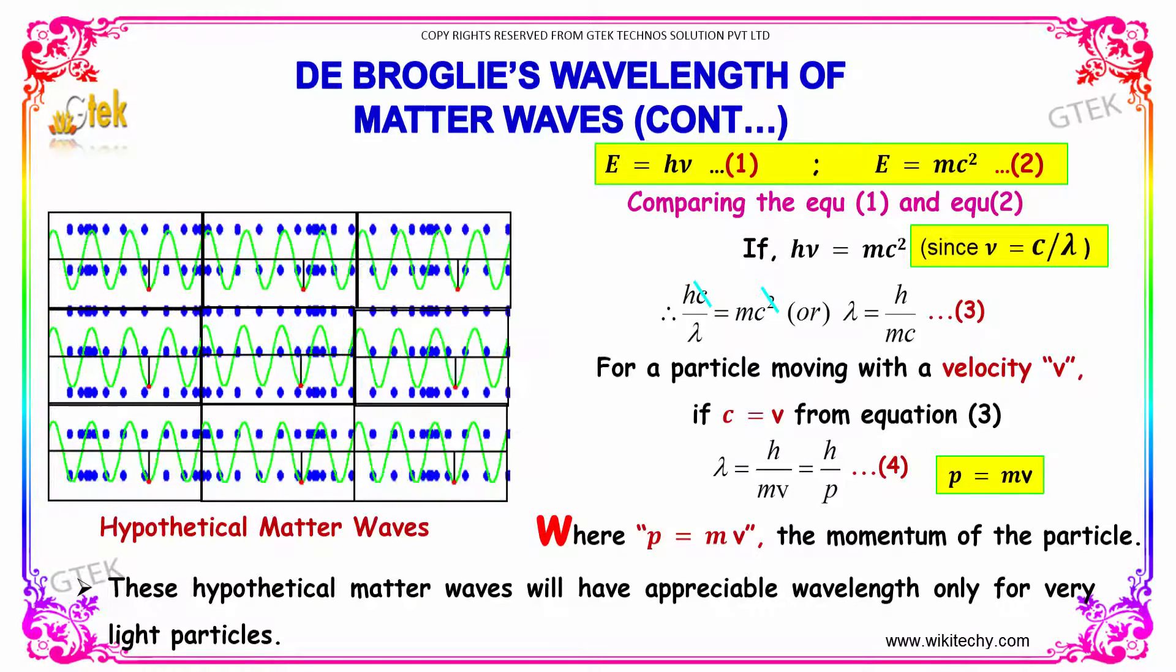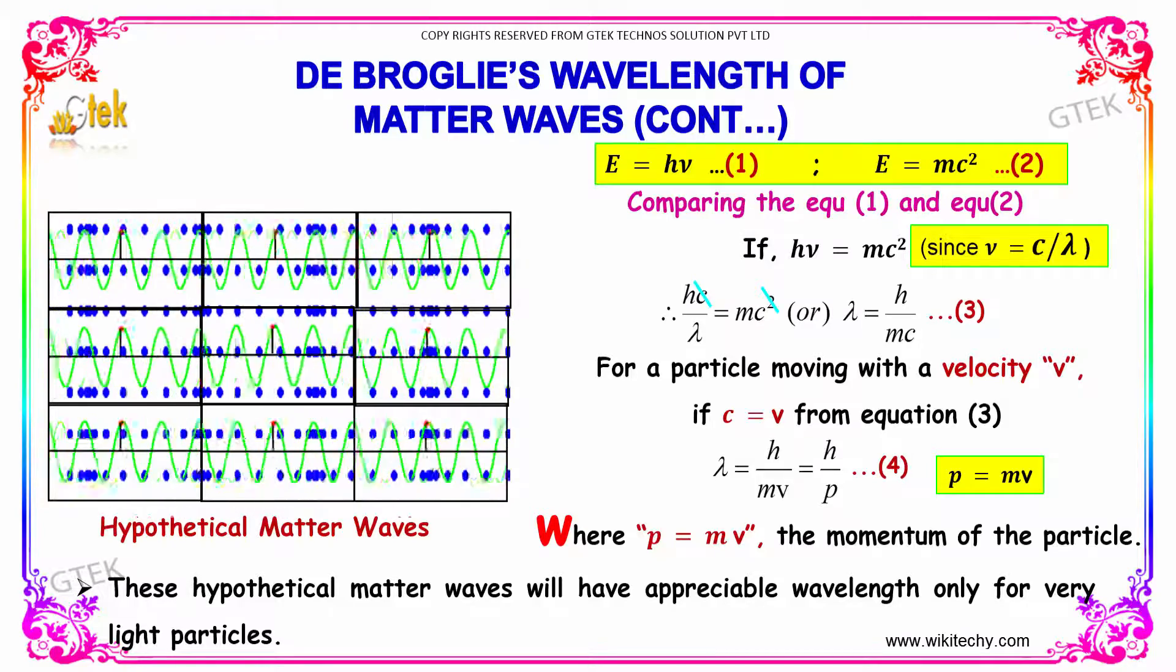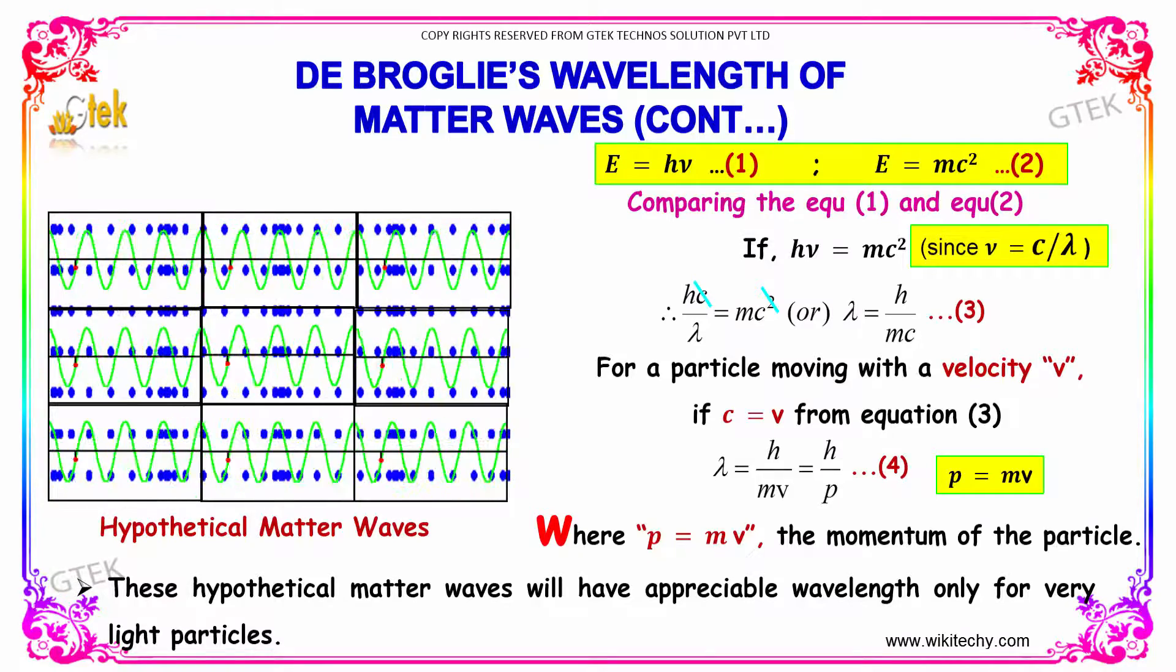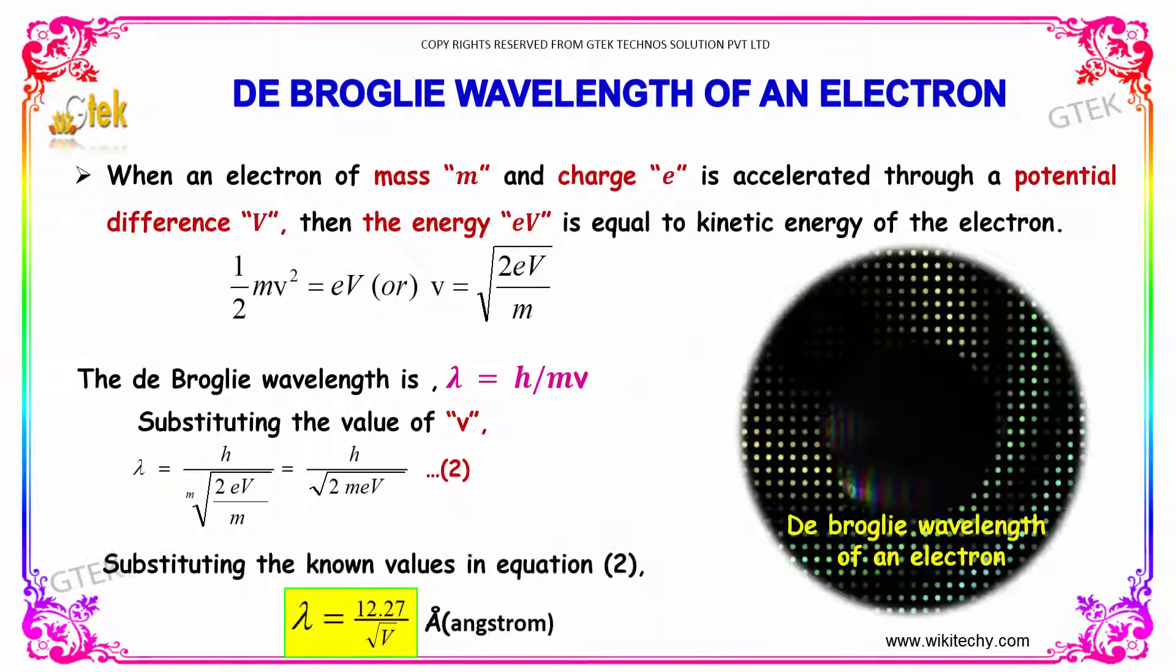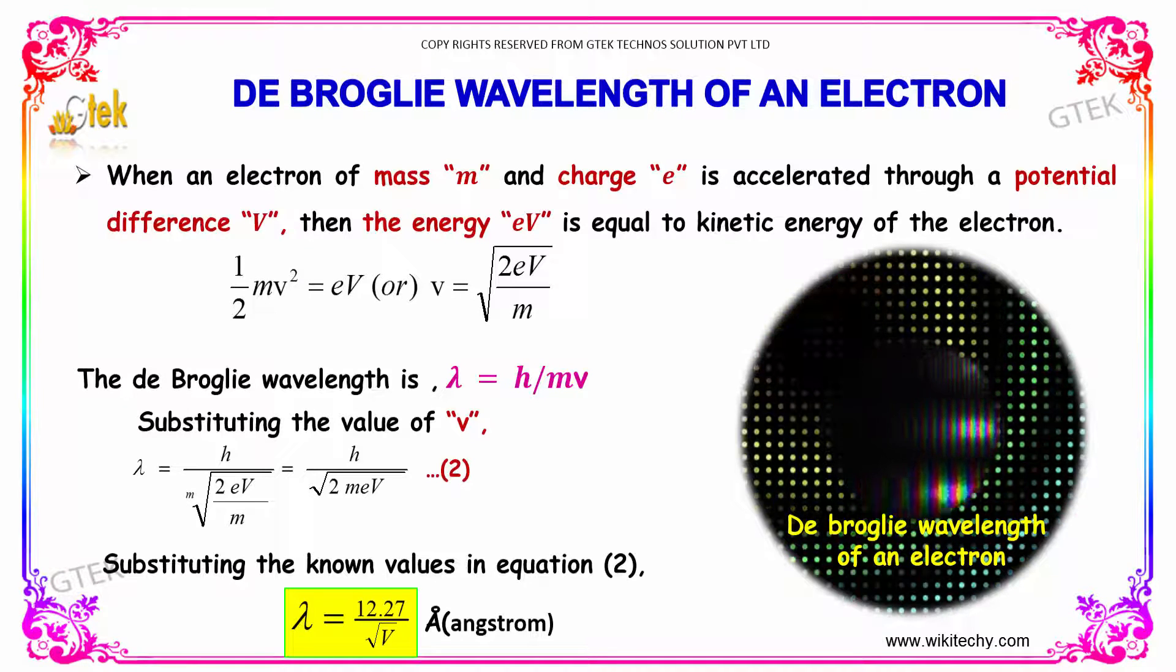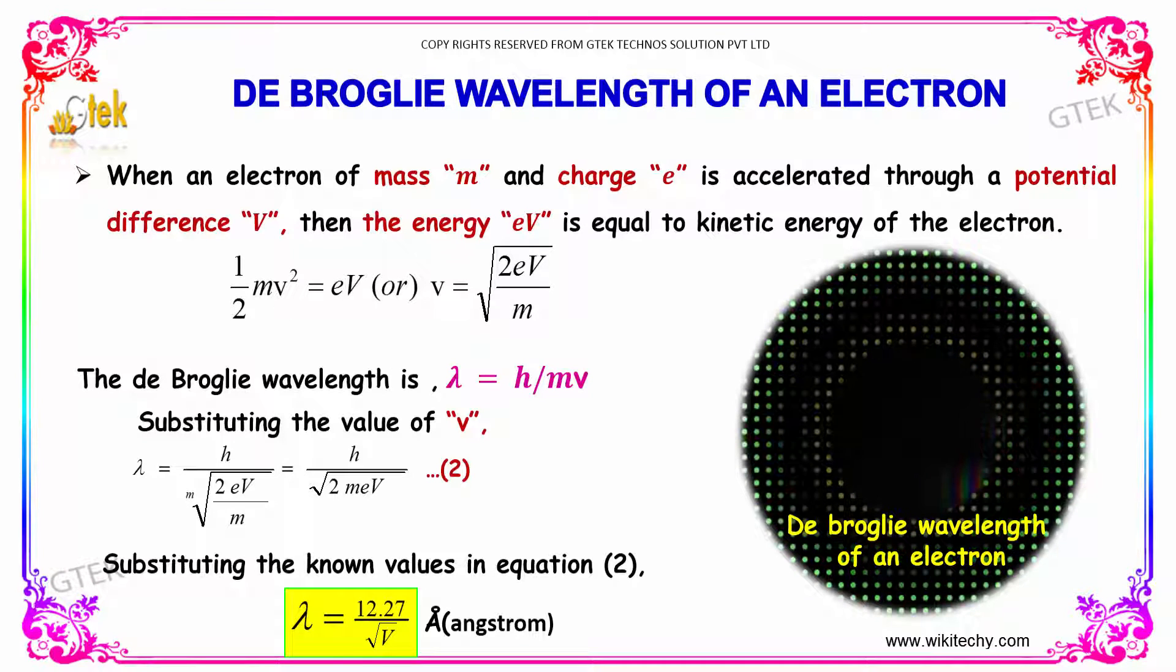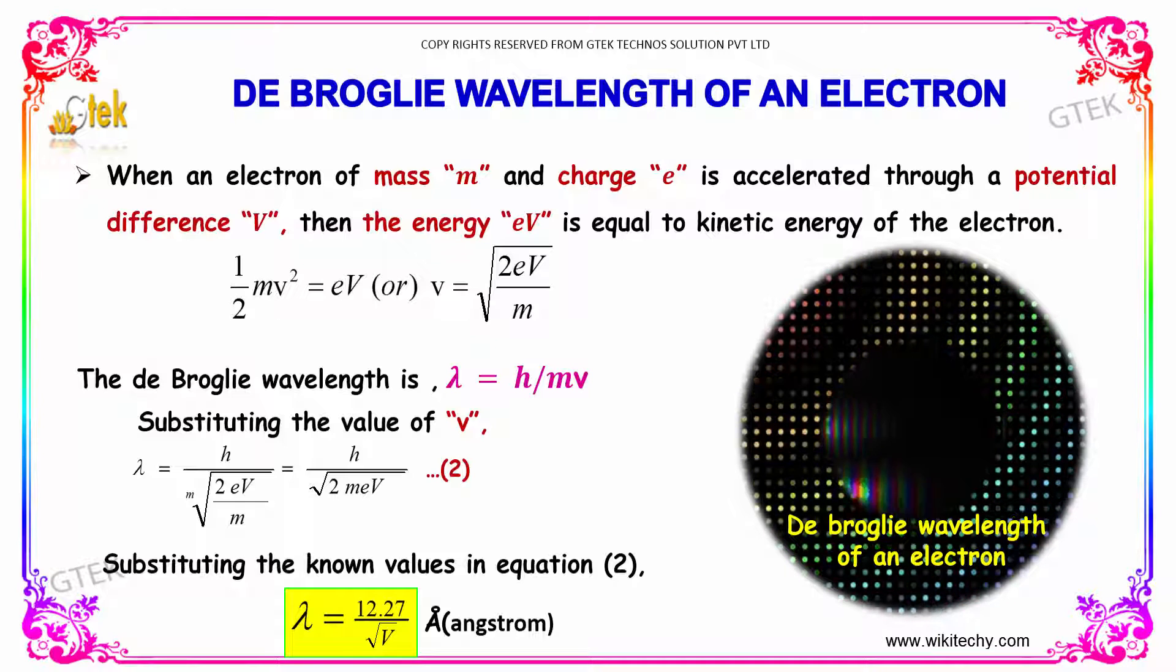These hypothetical matter waves have appreciable wavelength only for very light particles. When an electron of mass m and charge e is accelerated through a potential difference V, the energy eV equals the kinetic energy of the electron.